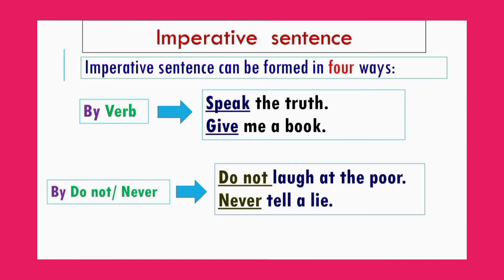An imperative sentence can be formed in four ways. Number one: by main verb — such as 'Speak the truth,' 'Give me a book.' Number two: by do not or never — such as 'Do not laugh at the poor,' 'Never tell a lie.' We can start an imperative sentence with 'do not' or 'never.'